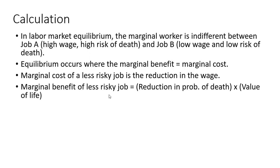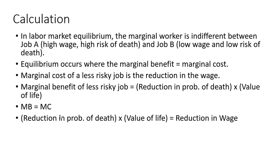The marginal benefit of taking a less risky job is basically an expected value. It's going to be the reduction in the probability of death multiplied by the value of life. So setting up the equation, marginal benefit equals marginal cost. The marginal benefit of taking a safer job reduces your probability of death by a certain amount, and if we multiply that amount by the value of life, we get the expected benefit, which will equal the reduction in the wage — the marginal cost in equilibrium.